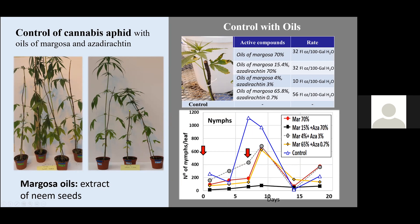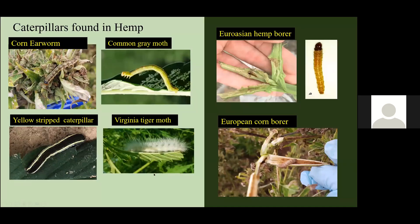We're moving into caterpillars found in hemp. We found commonly the corn earworm, the yellow striped caterpillar, and the common grey moths and Virginia tiger moths. These two, the later ones, are probably not causing too much damage, but they were present there. We also found the Eurasian hemp borer that we reported last year, but this time we're finding in the fields. We're also finding the European corn borer.